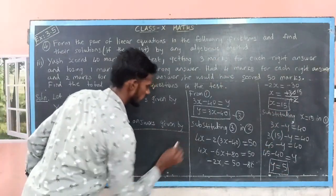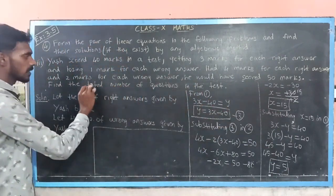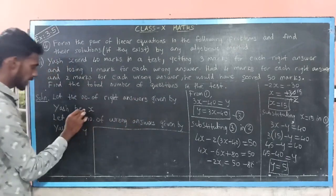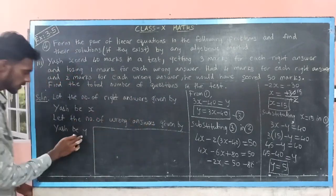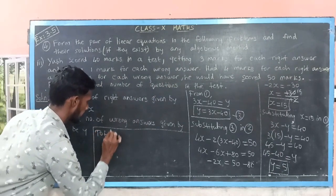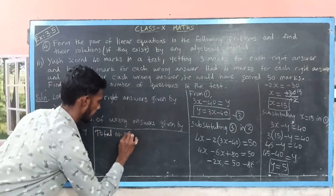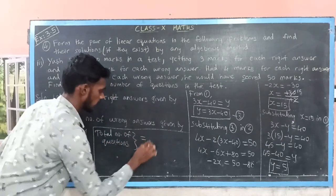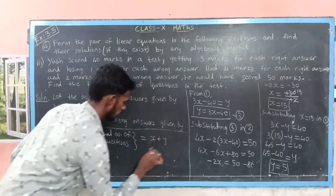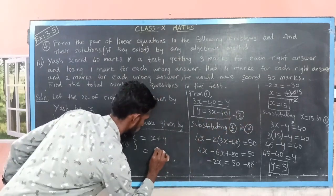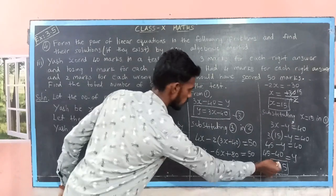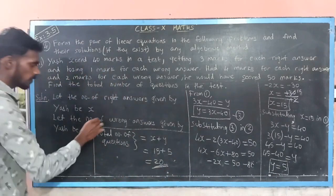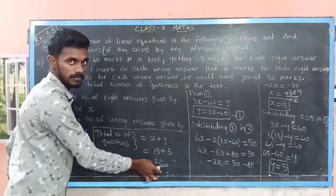Now let us conclude the answer. They asked for the total number of questions. Since the number of right answers is x and the number of wrong answers is y, the total number of questions is x plus y, which is 15 plus 5 equals 20. So the total number of questions asked in the test is 20.